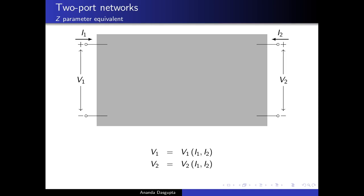Let me point out the convention here. I am using capital V1, capital V2 for the voltages, capital I1, capital I2 for the currents — these are the total values. A part of this voltage would usually be the quiescent point value or the bias value. The variations we will denote by small letters. So capital V1 is the total voltage, while small v1 would be the fluctuation of capital V1 about the quiescent point or bias point value.